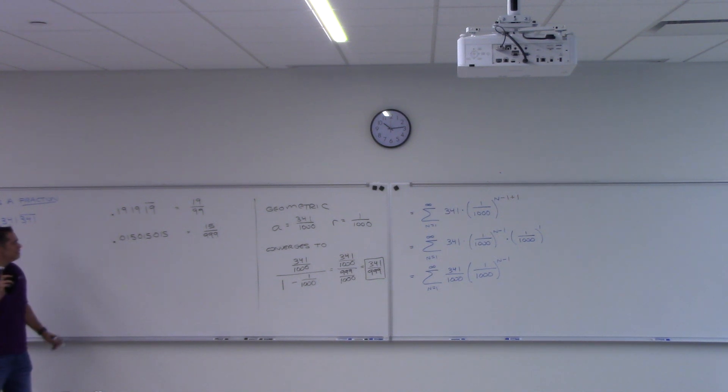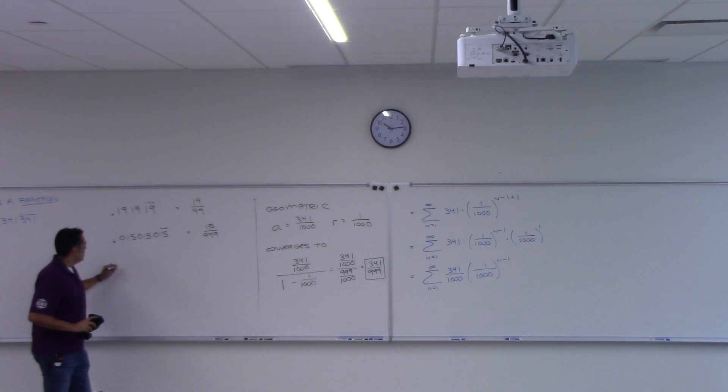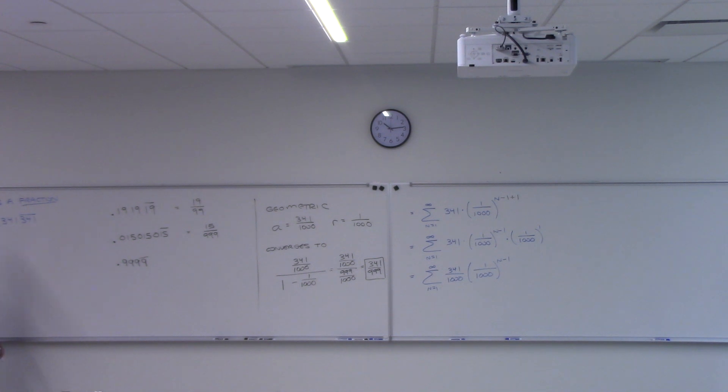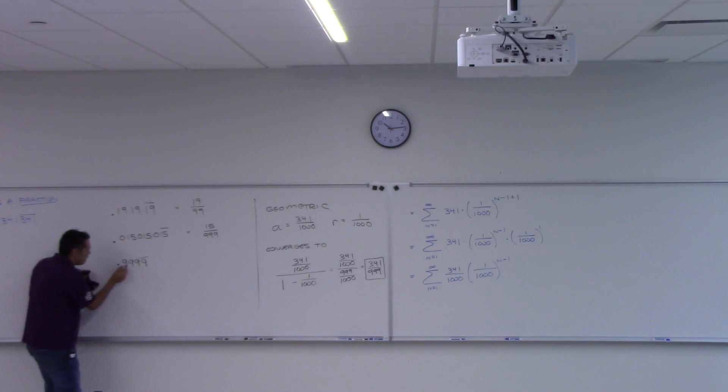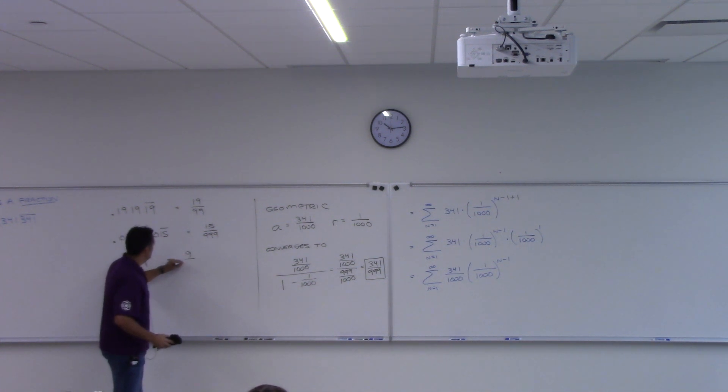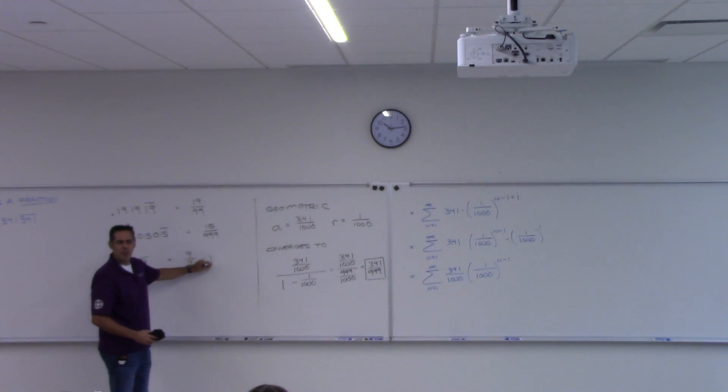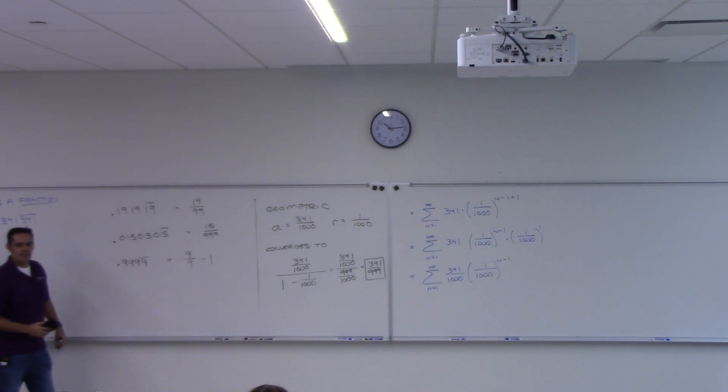With that idea, this is a really cool thing here. What's 0.9999 forever? So they repeat every one, right? All right, so you put that number over what? Nine, which is? One. Ooh. One.